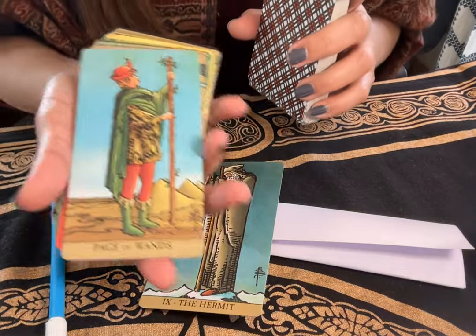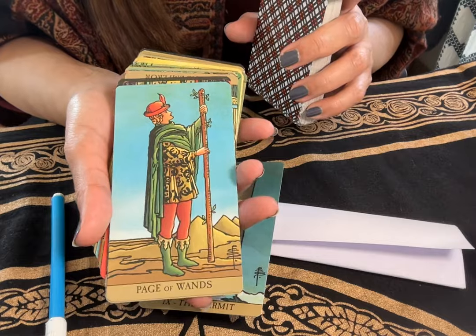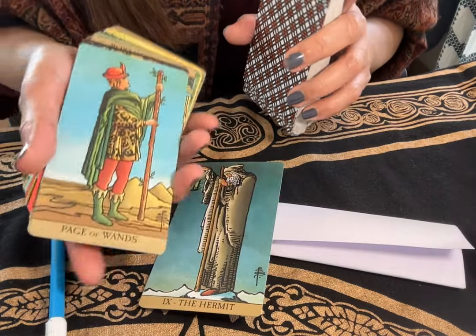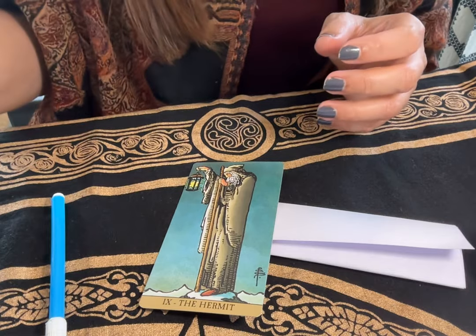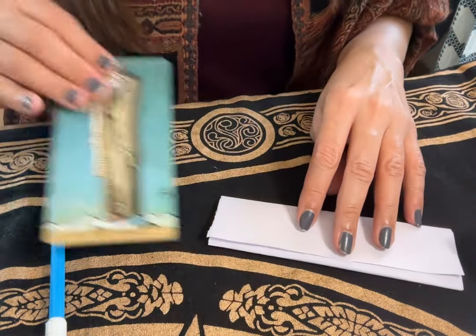Even this card says almost the same thing. Page of Wands - I've come looking for you, almost looking at your direction. No matter where you are - left, north, right, south, west, east, anywhere - they will come looking for you.